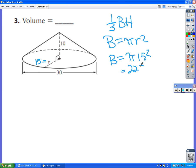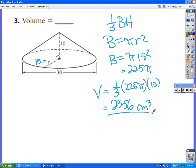or 225 pi. So now to come up with the volume of the entire cone, I need to go 1/3 times 225 pi times the height of that cone. And so on a calculator, I'm going to go 225 pi times 10, and then divide by 3 since the 3 is on the bottom of the fraction. And they want the answer to the nearest cubic centimeter, and so that's going to be 2356 cubic centimeters.